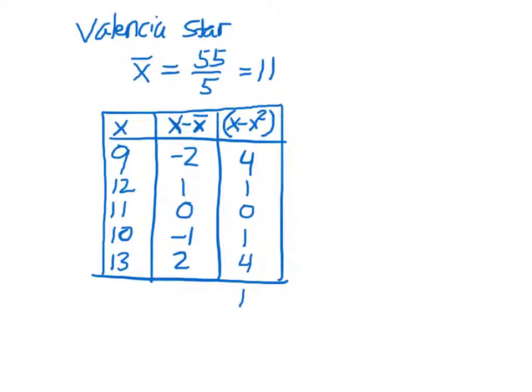And then the total is 10. So the standard deviation for Valencia Star is this number right here divided by the sample size, which is 5. And we take the square root and we get approximately 1.41.